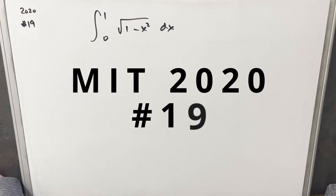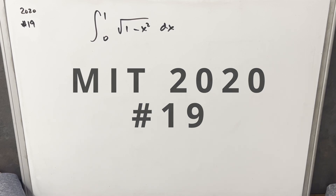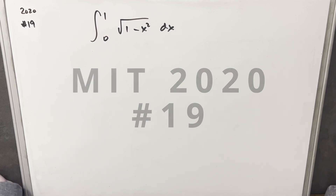We have here another integral. This one's from MIT 2020, problem 19. We have the integral from 0 to 1 of the square root of 1 minus x squared dx.